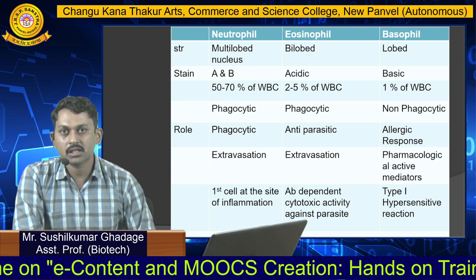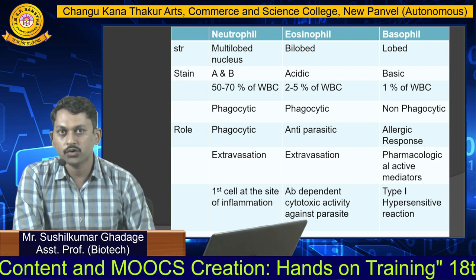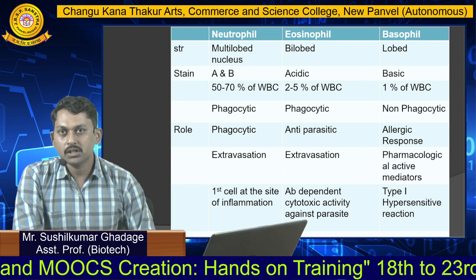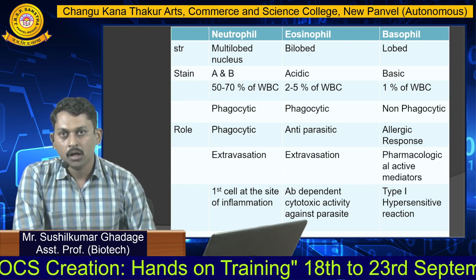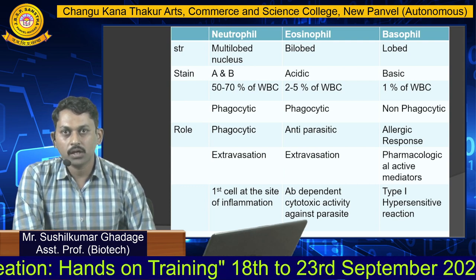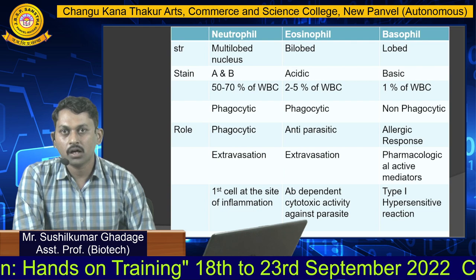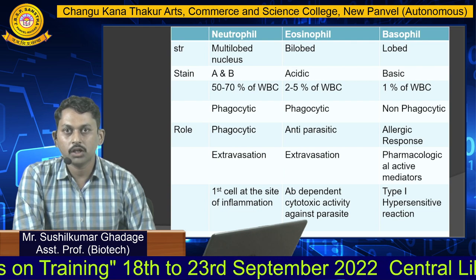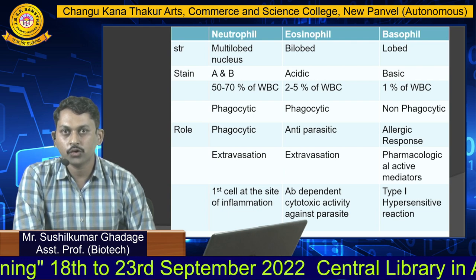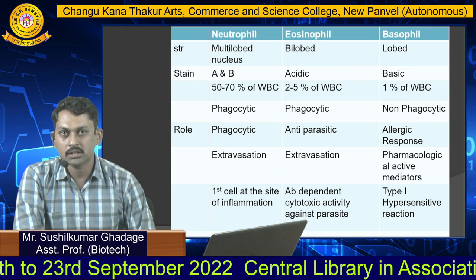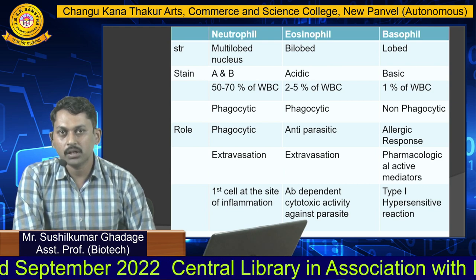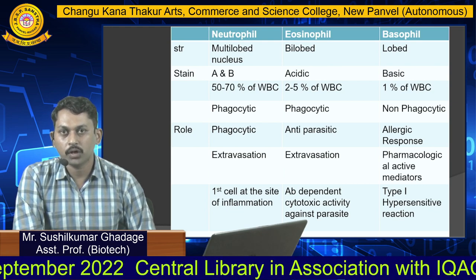When comparing neutrophil, eosinophil, and basophil in terms of nucleus structure: neutrophils have a multi-lobed nucleus, eosinophils have a bi-lobed nucleus, while basophils have a lobed nucleus.